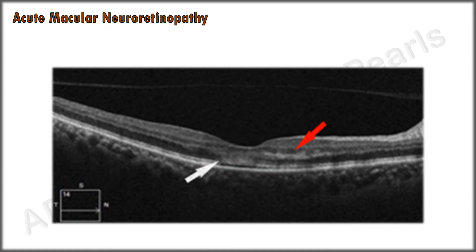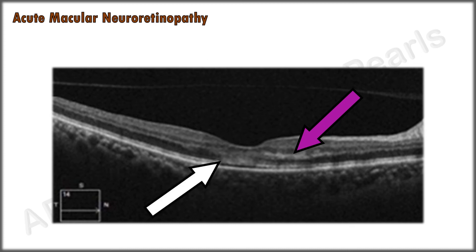The main differential diagnosis is acute macular neuroretinopathy. This is a much rarer entity with less than 100 reported cases in the literature in the last four decades, and typically it affects young healthy women from the teens to the thirties. The hyperreflective band-like AMN lesions develop slightly lower, at the junction of the outer plexiform and outer nuclear layers, and there may be associated disruption of the ellipsoid and interdigitation zones.